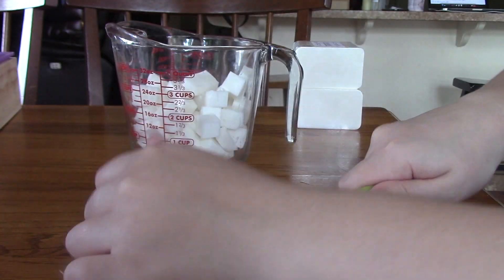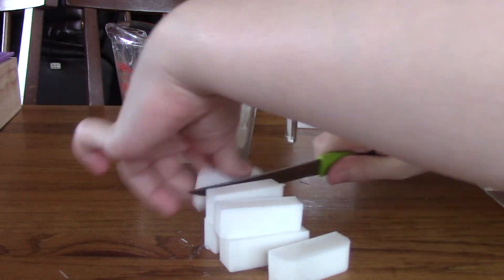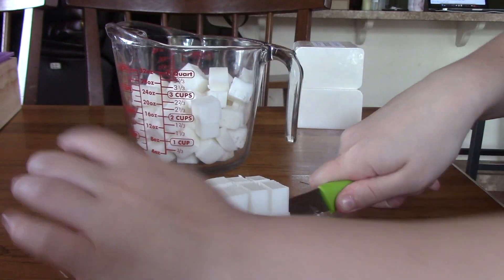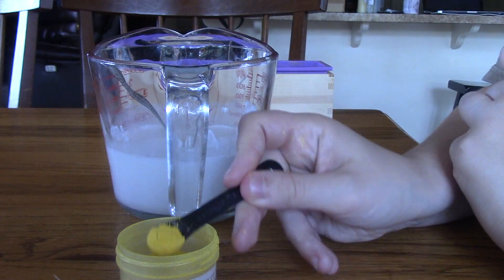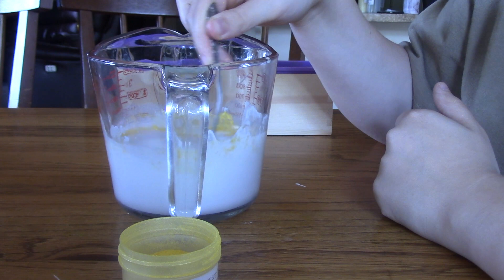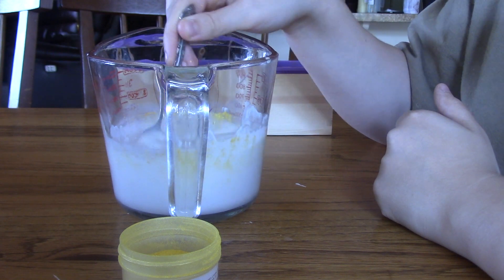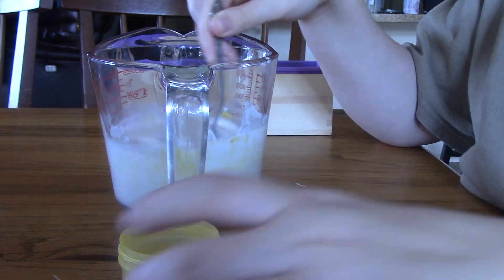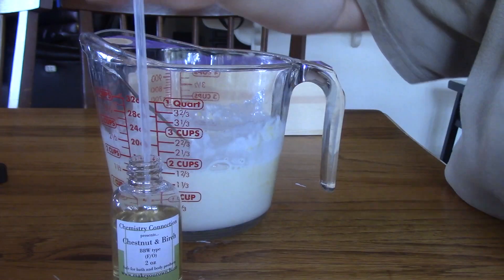Then we're going to add a half teaspoon of our magic yellow mica. You'll need to stir this for quite a while to make sure it is fully incorporated.